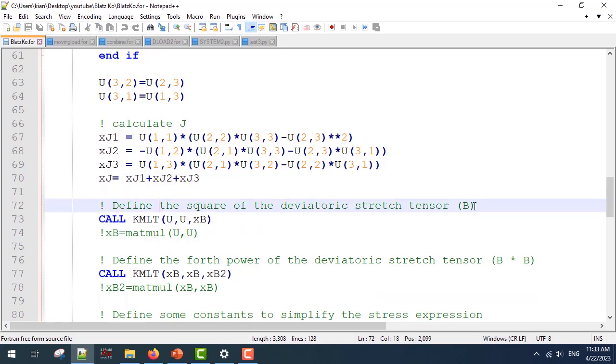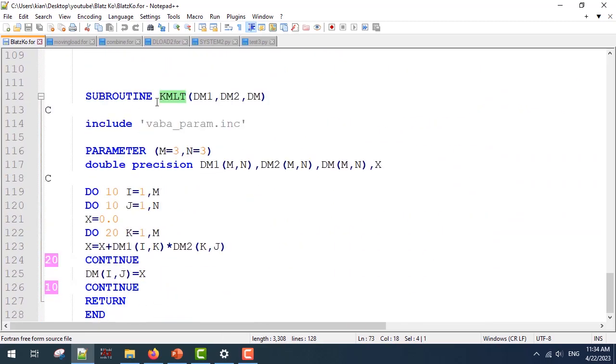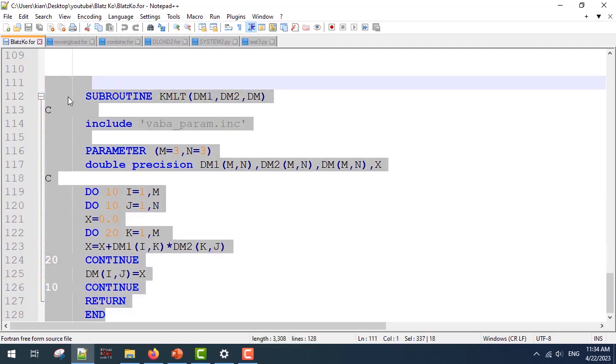Next, we can define the b matrix using u multiplied by u transposed, and since u is a symmetric matrix, we don't need to transpose it. Here I've used a subroutine which I've written for matrix multiplications. If you don't have this subroutine, you can simply use the MATMUL function which is a built-in for your Fortran code. And if you want to use this subroutine, you have to copy the subroutine at the end of your main VUMAT subroutine, in which I've copied it here.